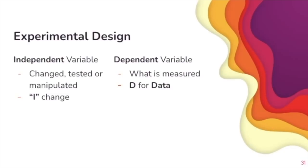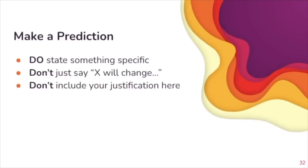In experimental design, make sure you recognize how we measure dependent variables. These are the things that are measured and how we take our data in the experiment. Independent variables are the things that are changed, tested, or manipulated. Think I, the experimenter, what am I changing for the independent variable? And D, what am I measuring for my data for the dependent variable? When it's asking you to make a prediction, make sure you state something specific. Don't just say I think this variable will change, or I think there will be a difference. You do want to make sure that you include whether it's an increase, a decrease, death, growth, whatever. But you don't need to include your justification unless it asks you to justify. Answer what the question is asking. Don't do more, don't do less.